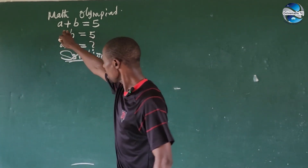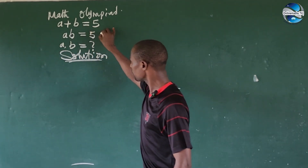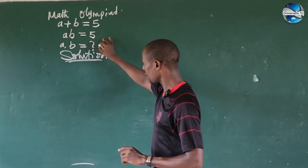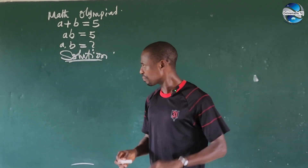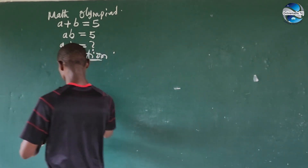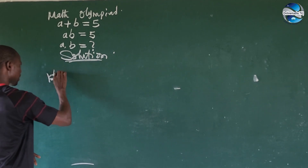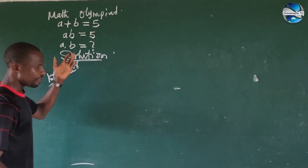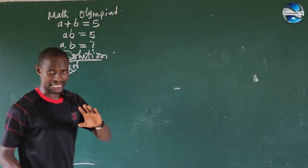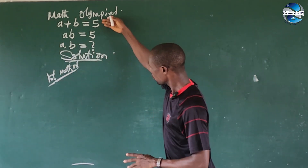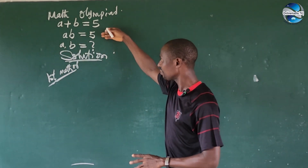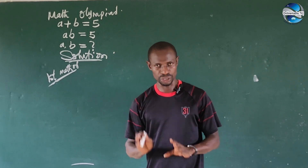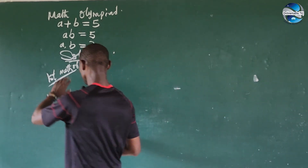The question is: a plus b equals five — that's equation one — and a times b equals five — that's equation two. The first approach I'm going to use is the Test Method. The test method is very easy. We have five in equation one and five in equation two, so we can equate equation one to equation two.